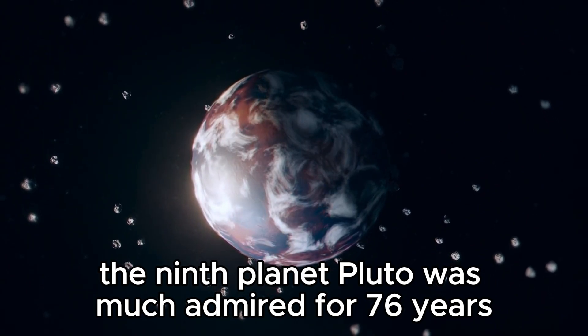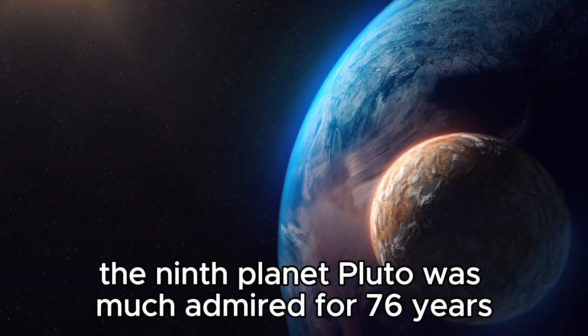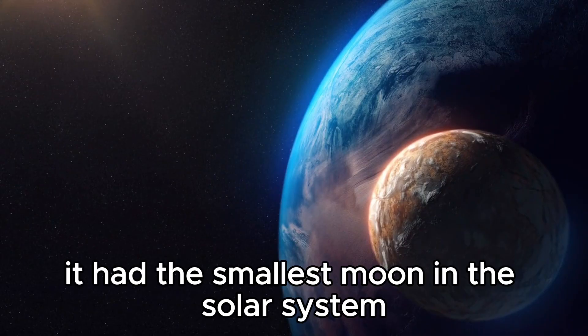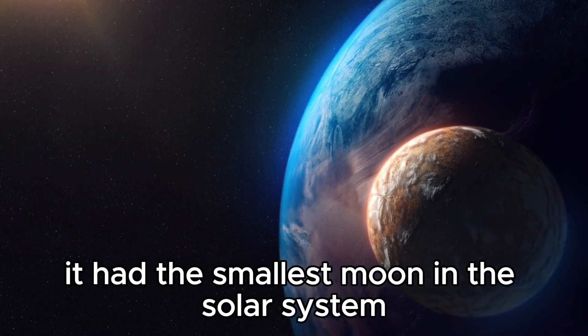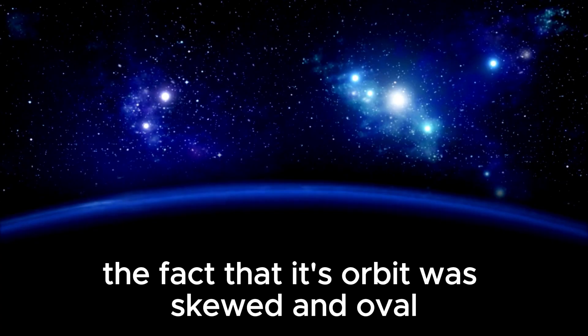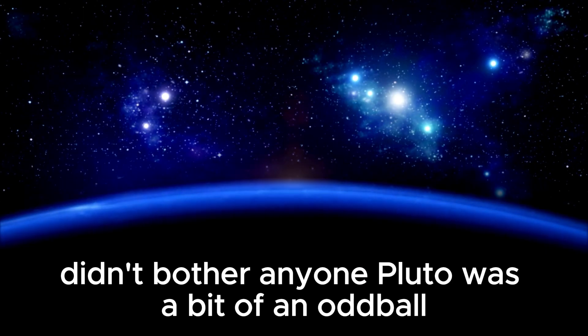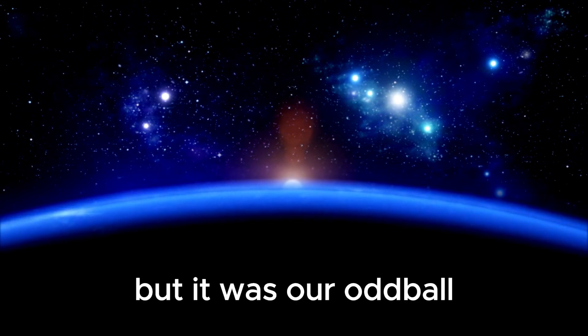The ninth planet, Pluto, was much admired for 76 years. People noticed that it had the smallest moon in the solar system. The fact that its orbit was skewed and oval didn't bother anyone. Pluto was a bit of an oddball, but it was our oddball.